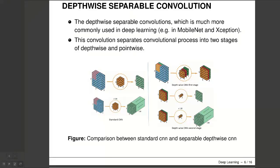Unlike spatial separable convolutions, depth-wise separable convolutions work with kernels that cannot be factored into two smaller kernels. Therefore it is more commonly used in deep learning — this is the type of separable convolution found in TensorFlow, for example. If you search for tf.layers.separableConv2D, this is the depth-wise separable convolution. It is so named because it deals not just with the spatial dimensions but with the depth dimension as well — the number of channels. It has two stages: the depth-wise stage and the point-wise stage.